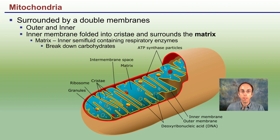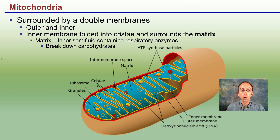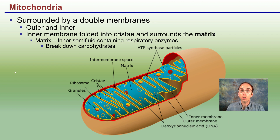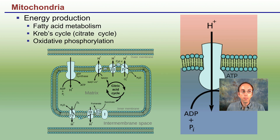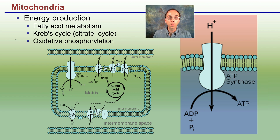Mitochondria are surrounded by double membranes — an outer and inner — much like the chloroplast. These folds, the cristae, allow for a large surface area-to-volume ratio. The cristae surround the matrix, which is the inner semi-fluid containing respiratory enzymes involved in energy production. Energy is generated by breaking down carbohydrates through fatty acid metabolism, the Krebs cycle, and oxidative phosphorylation — creating gradients across membranes to ultimately generate ATP, the energy currency of the cell.